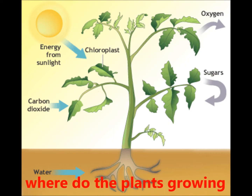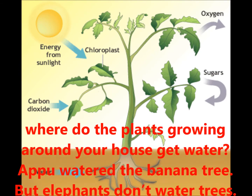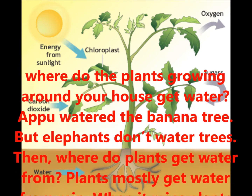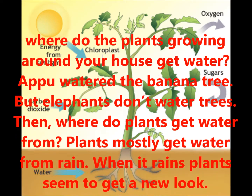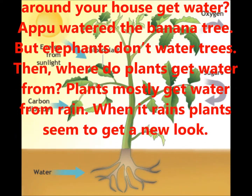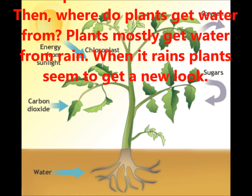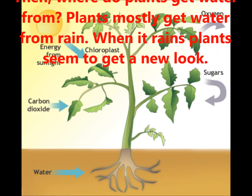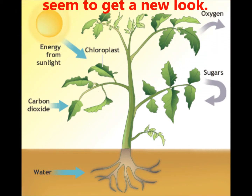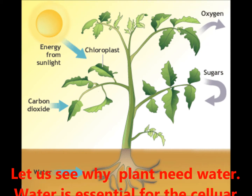Where do the plants growing around your houses get water? Appu watered the banana tree, but elephants do not water the trees. Then where do plants get water? Plants mostly get water from rain. When it rains, plants seem to get a new look. Let us see why plants need water.